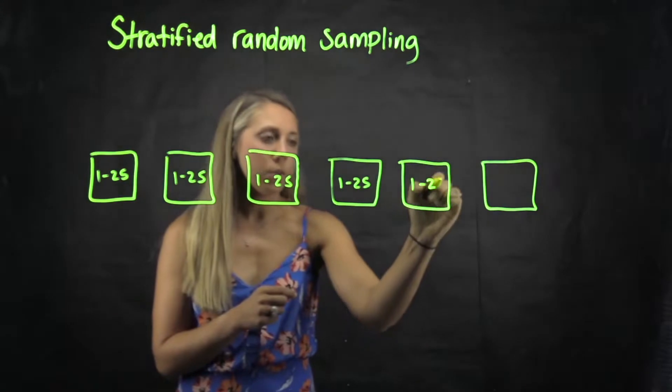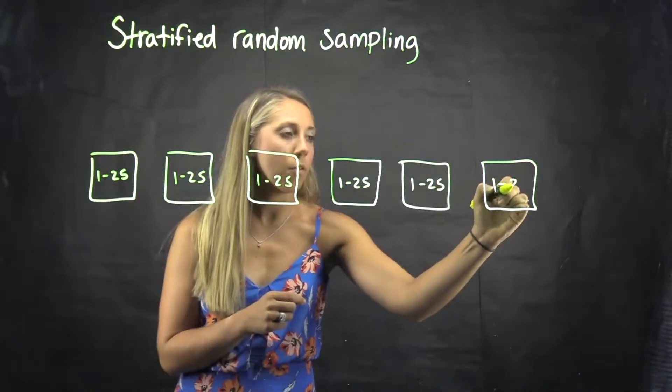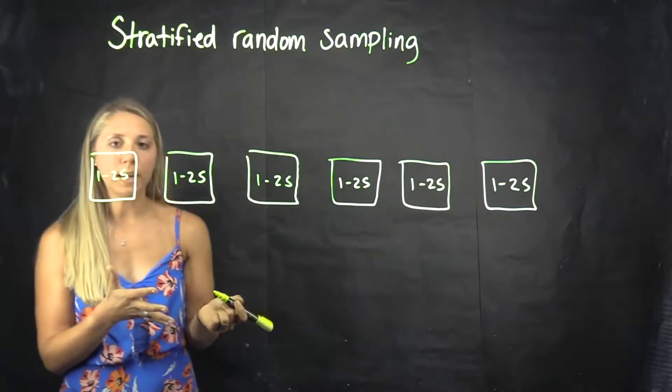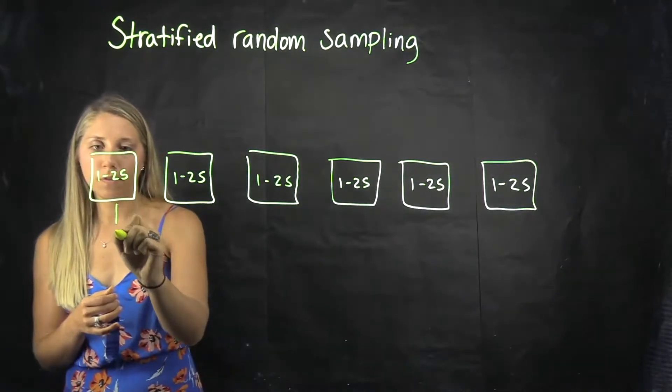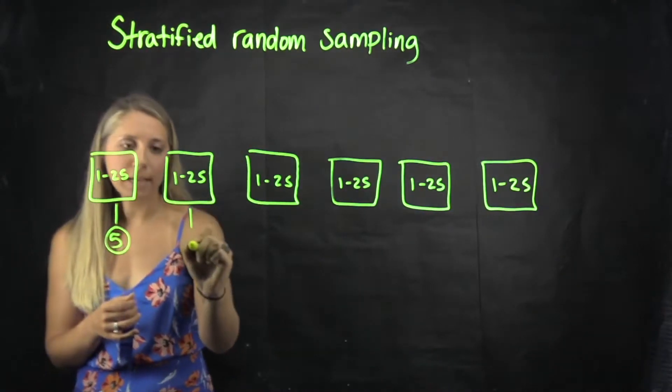We would then use some type of random number generator to take 5 from each classroom.